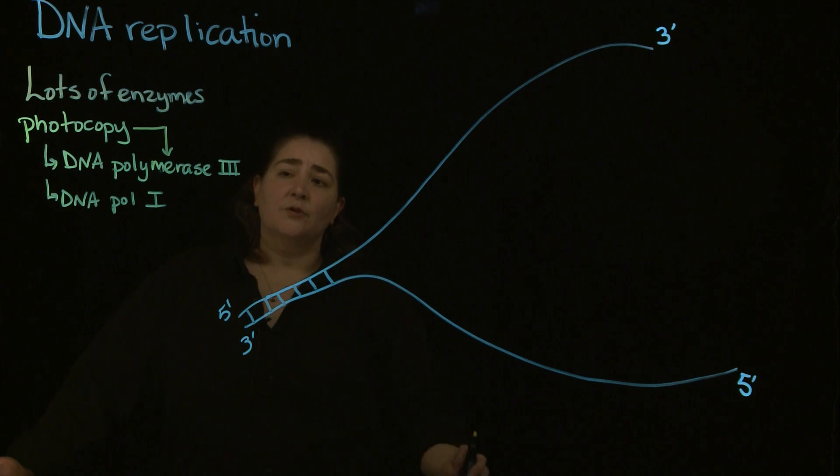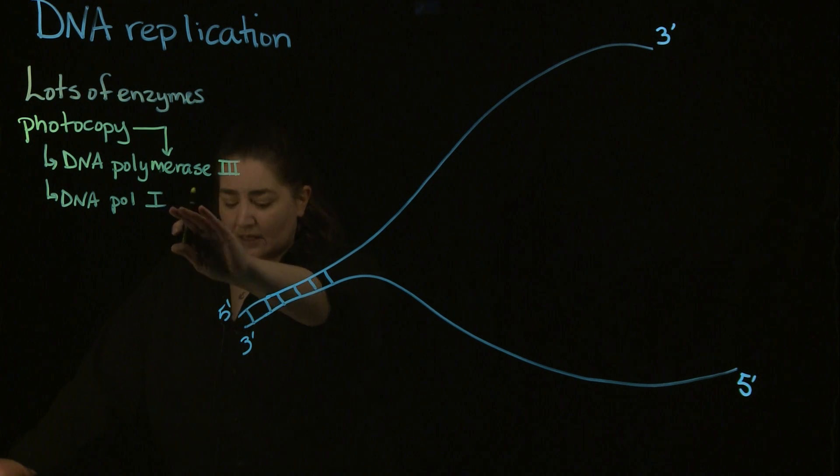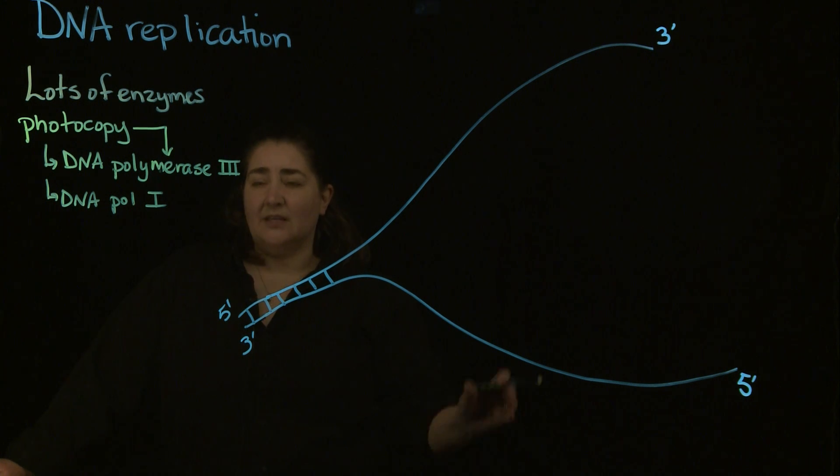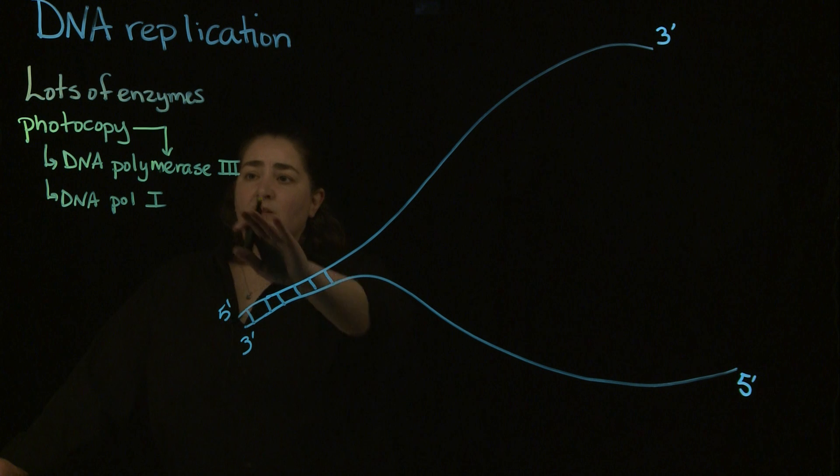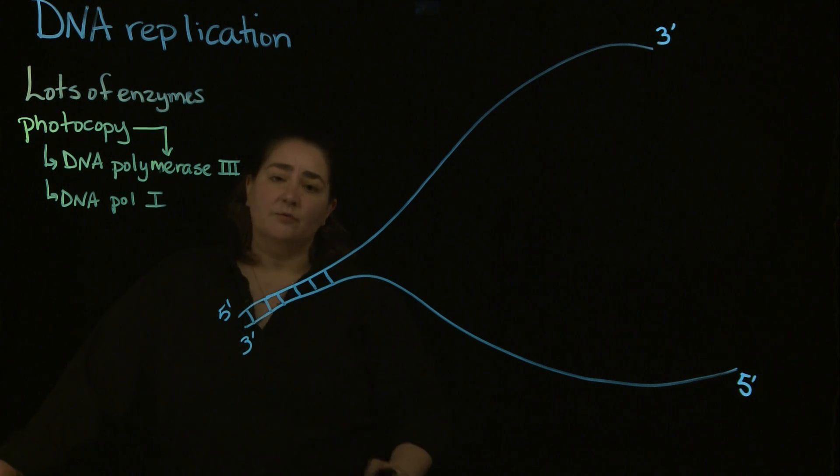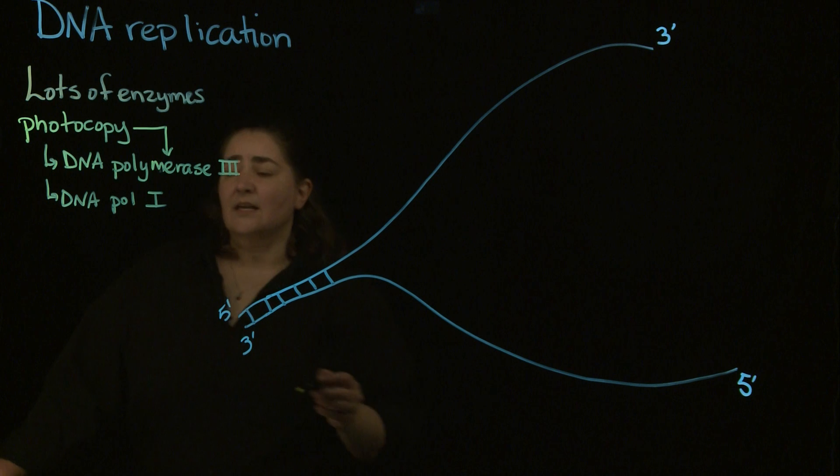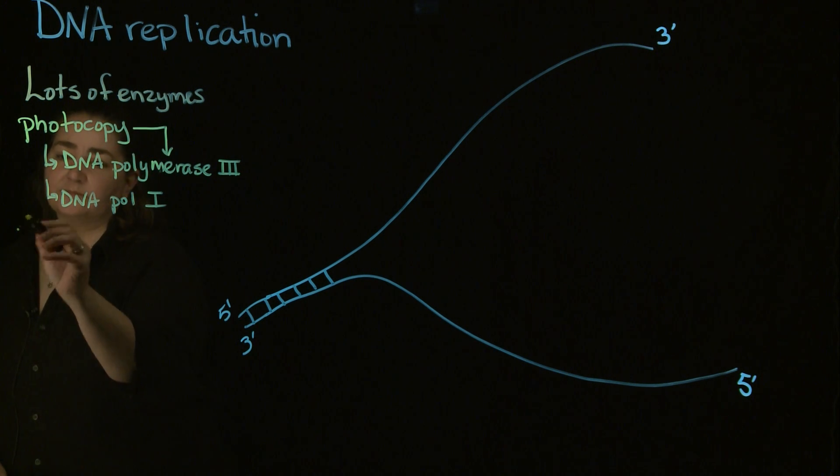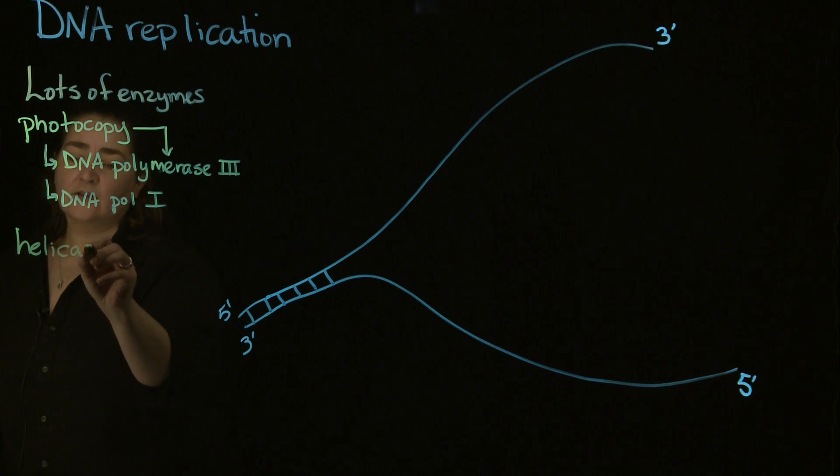The thing about DNA polymerase 3 is it needs to have something to start with. It can't just start making a copy from nothing. DNA polymerase 1 is going to come in kind of at the end. DNA polymerase 1 is actually what removes the RNA that's put down and replaces it with DNA. There's also a DNA polymerase 2, but I'm not so concerned that you know about that one. Know DNA polymerase 3 and DNA polymerase 1.